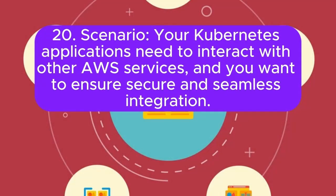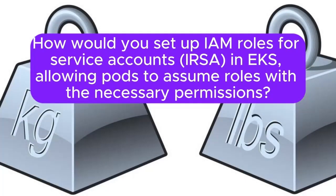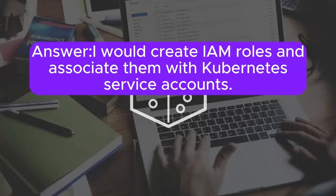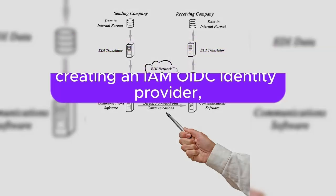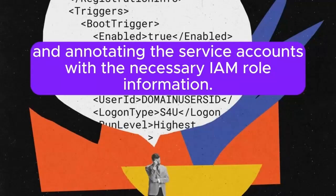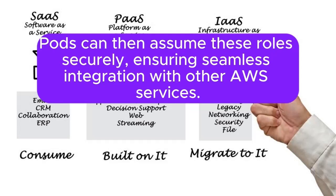Scenario 20: Your Kubernetes applications need to interact with other AWS services, and you want to ensure secure and seamless integration. How would you set up IAM Roles for Service Accounts (IRSA) in EKS, allowing pods to assume roles with the necessary permissions? Answer: I will create IAM roles and associate them with Kubernetes service accounts. This involves creating an OIDC provider for the EKS cluster, creating an IAM OIDC identity provider, and annotating the service accounts with the necessary IAM role information. Pods can then assume these roles securely, ensuring seamless integration with other AWS services.